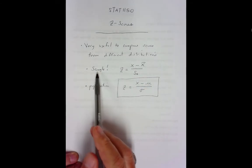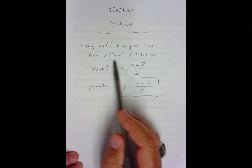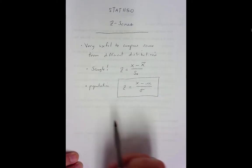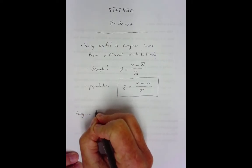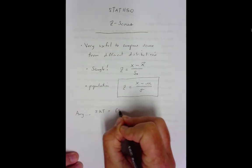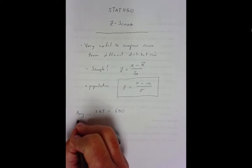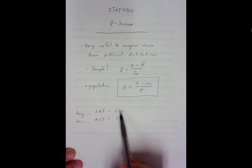One very useful property of z-scores is that they allow you to compare scores from different distributions. Let's say Amy and John are arguing about who scored highest on their college entrance exams. Amy took the SAT and scored 680; John took the ACT and scored a 28. Amy says 680 is bigger than 28, but that logic doesn't work because these scores come from different distributions.